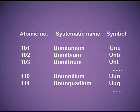Next example, atomic number 102: its systematic name is Unnilbium. 'Un' for 1, 'nil' for 0, 'bi' for 2, and the name ending is 'ium', giving Unnilbium. The symbol will be Unb — the first alphabet U is capital, and the next letters, small n and small b, are in lowercase.